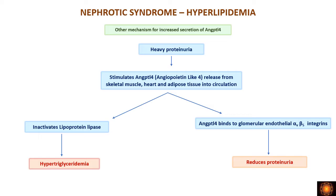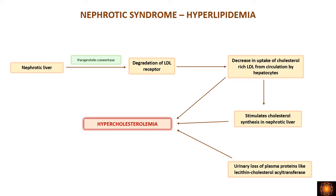Additionally, as a reflex mechanism for heavy proteinuria, angiopoietin-like 4 protein is released from skeletal muscle, heart, and adipose tissue. This protein binds to proteins on glomerular endothelial cells to reduce proteinuria. However, it also inactivates lipoprotein lipase, causing hypertriglyceridemia. So both mechanisms — the free fatty acid feedback and the proteinuria reflex — contribute to hypertriglyceridemia in nephrotic syndrome.